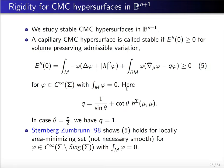We also study stable CMC hypersurfaces in a ball. A capillary CMC hypersurface is called stable if the second derivative of the energy is non-negative for volume-preserving admissible variations. We can calculate the second variation formula for the energy function: the interior part involves minus phi times the Jacobi operator, and there is a boundary term involving phi times the normal derivative of phi minus q times phi.